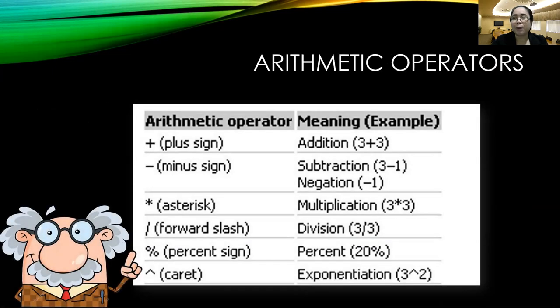What are the operators that belong to arithmetic? You have plus for addition, minus for subtraction or negation, the asterisk for multiplication, the forward slash for division, percent, caret for exponentiation.